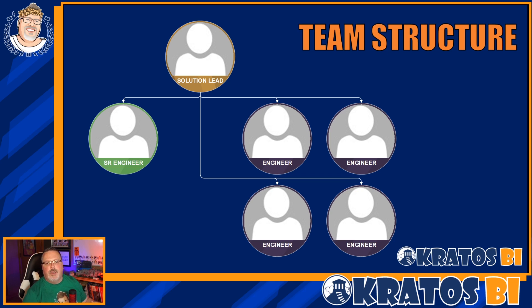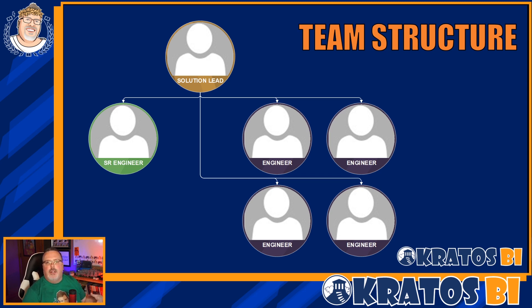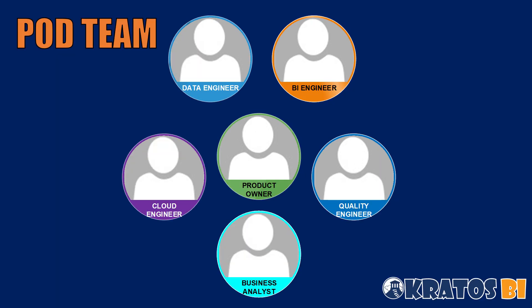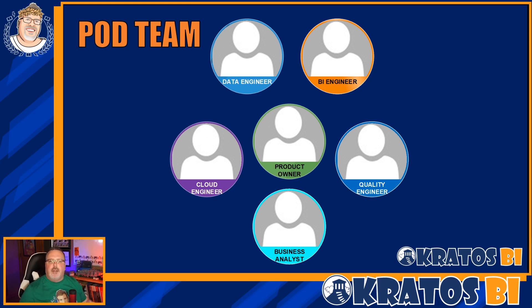This structure is highly effective. As a team grows and matures, you can increase the number of engineers reporting up to the Solution Lead or Senior Engineer — it's a maturity judgment you have to make inside your organization. The next structure is a Pod team, which is a combination of all the skill sets and team members necessary to deliver the features that an agile business is looking for.